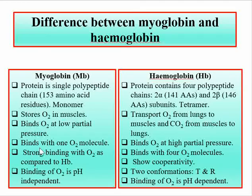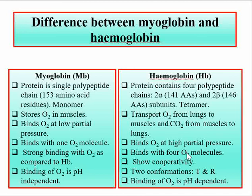Because myoglobin is monomeric, it binds only one oxygen molecule, while hemoglobin binds four oxygen molecules since it is a tetramer with four heme groups. Hemoglobin shows cooperativity of oxygen binding — as oxygen binds to one subunit, it enhances the binding of oxygen to the other subunits.